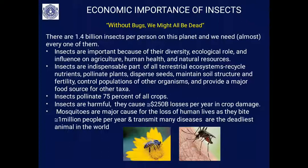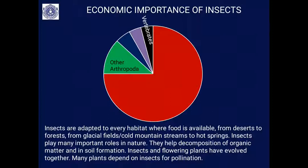Insects are harmful also — they cause almost 250 billion dollars in crop damage per year. Mosquitoes are a major cause of loss of human lives, as they bite one million people per year and transmit many diseases; that is why they are called the deadliest animal on earth. Not just mosquitoes — there are many other insects that also cause human deaths, which we will discuss later.